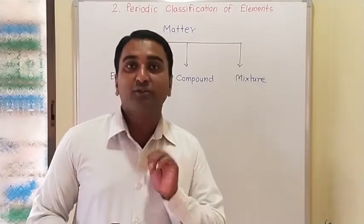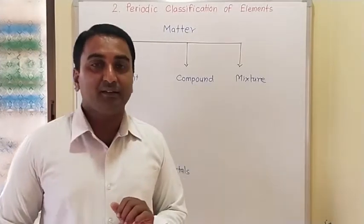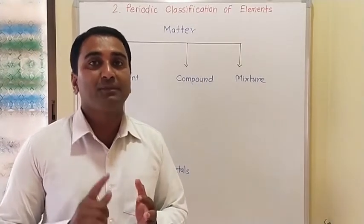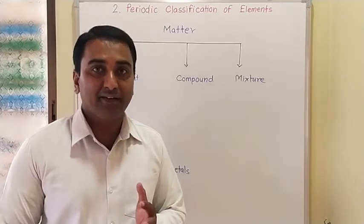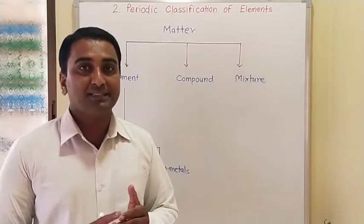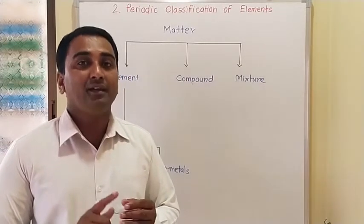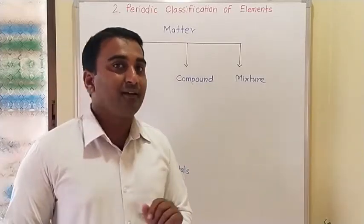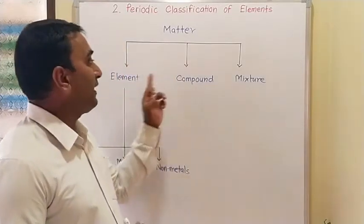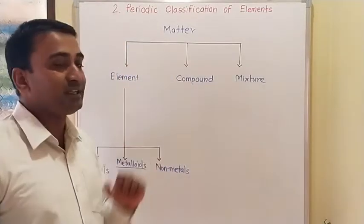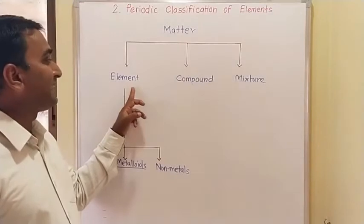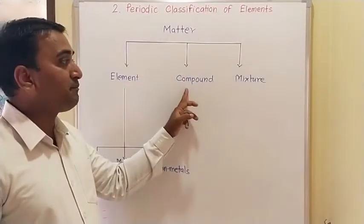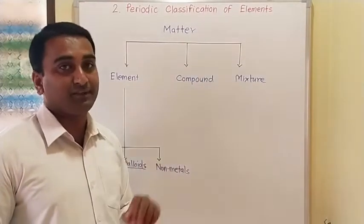According to new information, there are five states of matter: solid, liquid, gaseous, plasma, and Bose-Einstein. These are the five states of matter. But the types of matter are three: the first type is element, the second is compound, and the third is mixture.